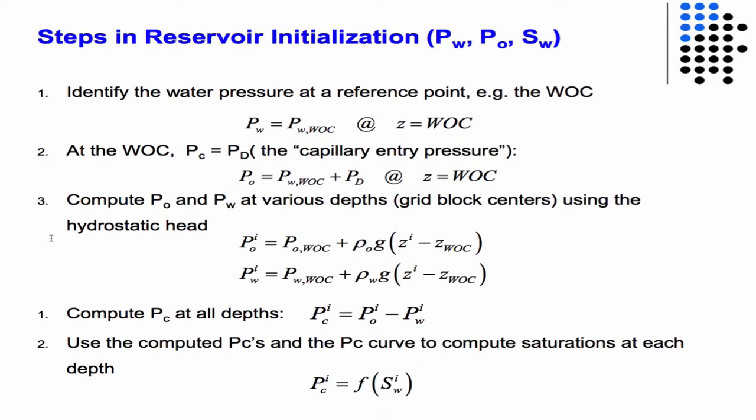The i here refers to the i-th grid block corresponding to the z-height of that grid block. So every grid block — if we're talking about a vertical reservoir — will have some z distance. Via these equations, you can compute the pressure at the i-th grid block for the oil and the water.